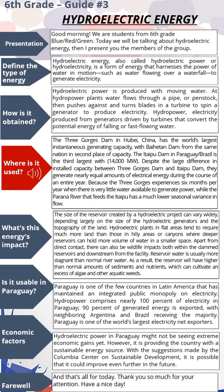Where is it used? The Three Gorges Dam in Hubei, China has the world's largest instantaneous generating capacity, with Baihetan Dam from the same nation in second place. The Itaipu Dam in Paraguay and Brazil is the third largest, with 14,000 megawatts.